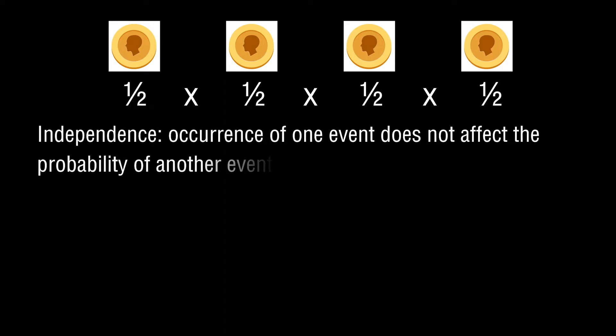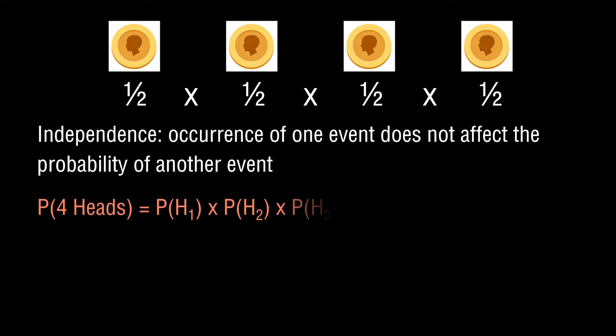In this situation, the probability that heads would occur on the second toss is assumed to be independent of what happened on the first toss. If you invoke this principle, the probability of getting four heads in a row is equal to the probability of each individual event multiplied together.